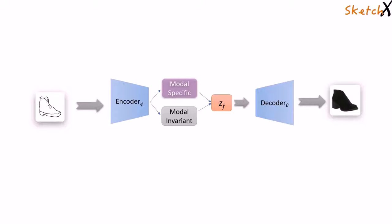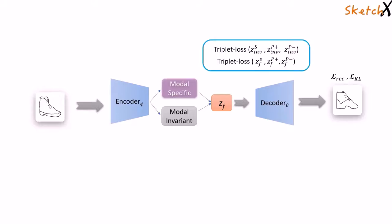Additionally, we perform cross-style translation of sketches which captures the style variations of sketches pertaining to one object. Besides reconstruction loss, the model is mainly trained on the discriminative triplet loss objective over the invariant part and the generated sample.